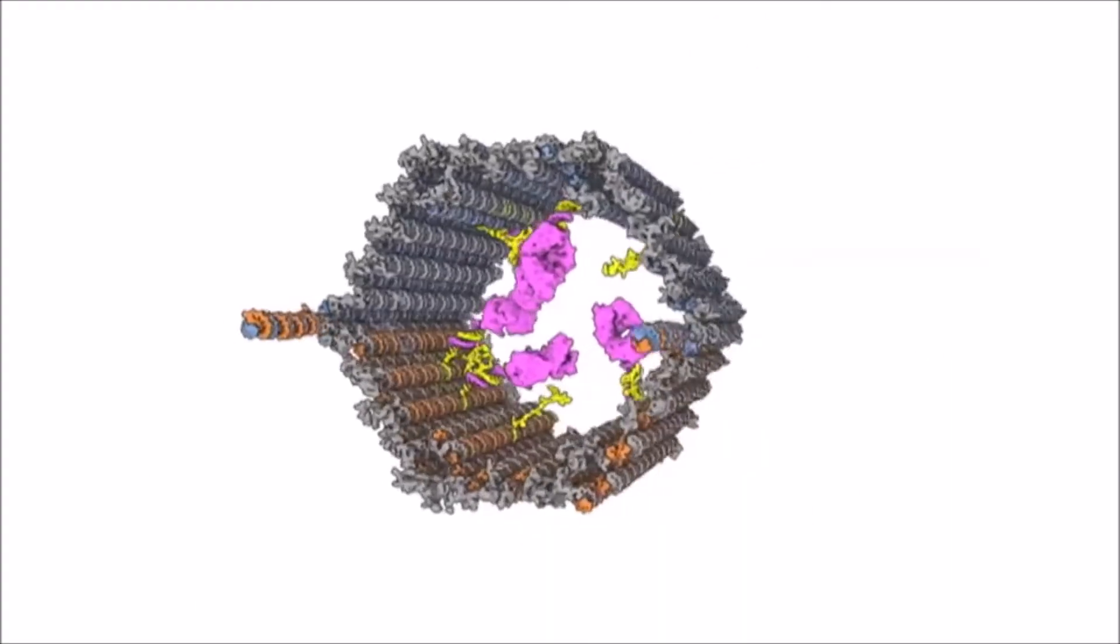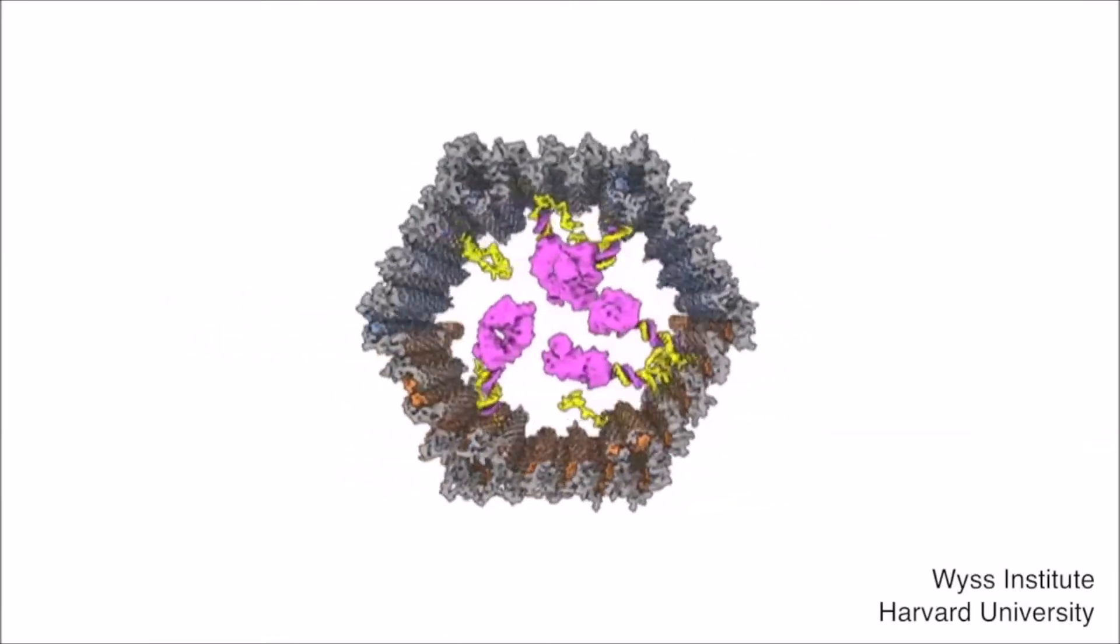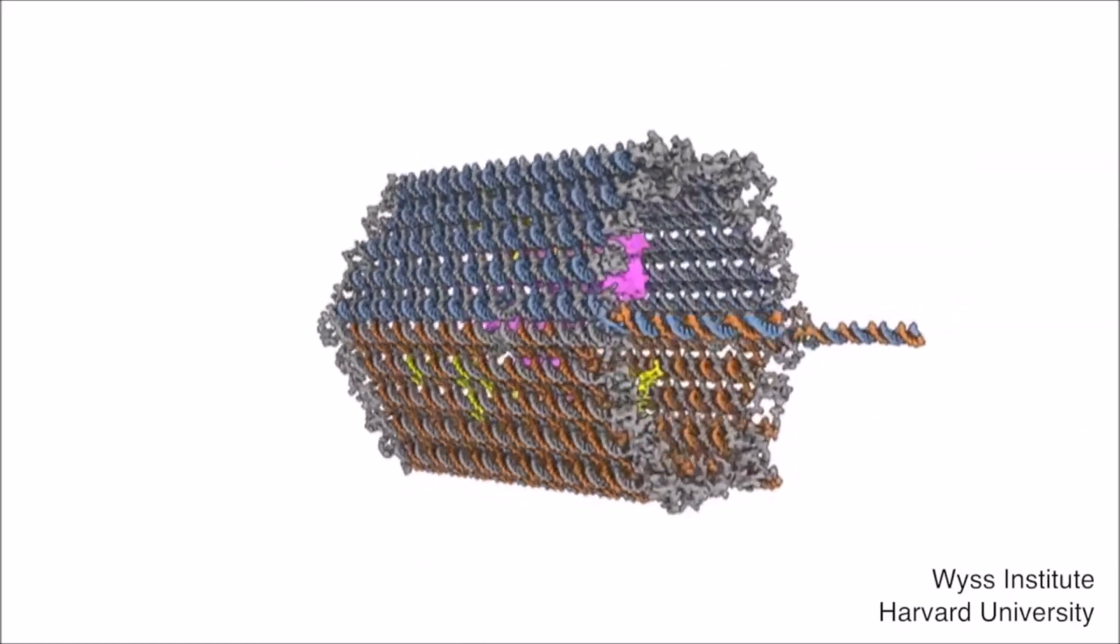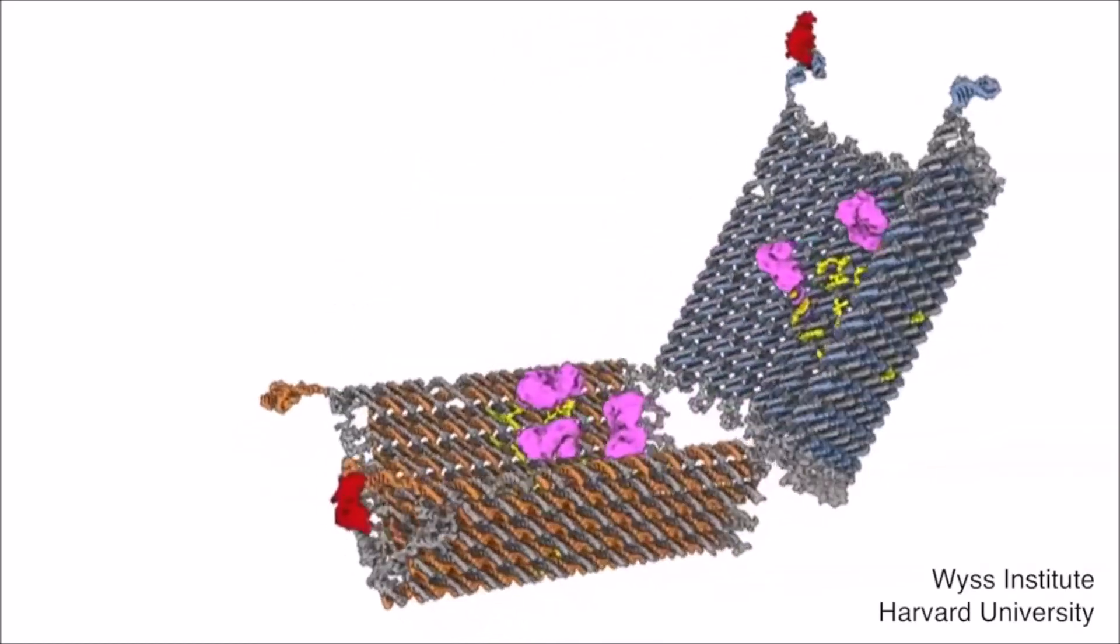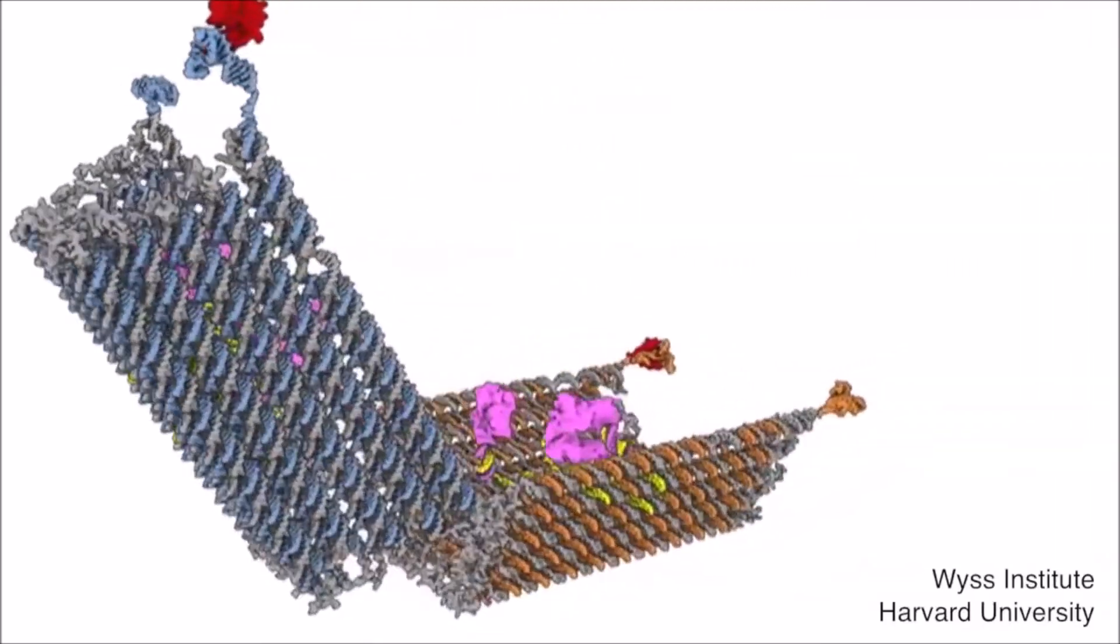Number 1. DNA Nanobots. If genetic material is sequenced just right, it can create a microscopic structure capable of following a prescribed path and delivering a destination-specific payload. Hopes for the development are high, as someday they could be useful in seeking and destroying cancer cells without damaging healthy ones nearby.